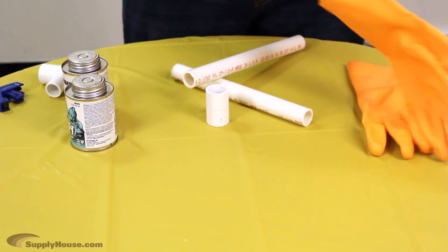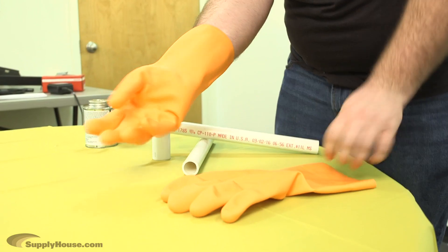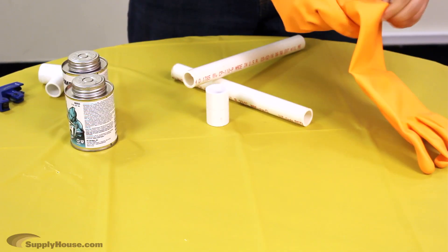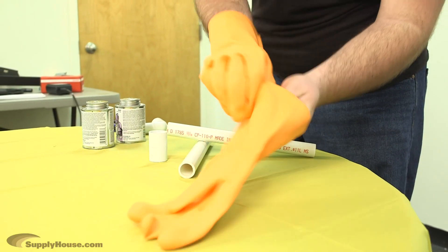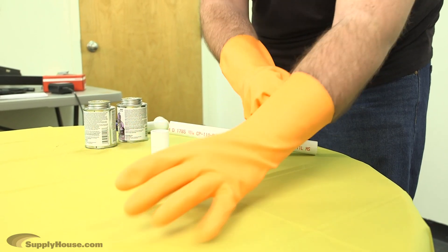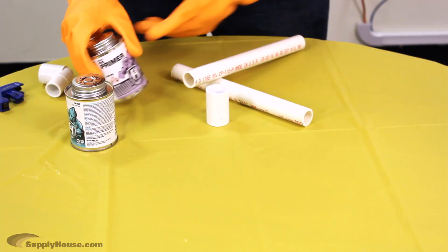Always make sure to use some type of hand protection when working with PVC chemicals. We recommend the large yellow kitchen gloves available at most grocery and department stores, as they won't break down like standard nitrile or surgical gloves.